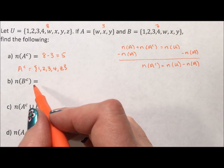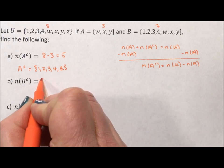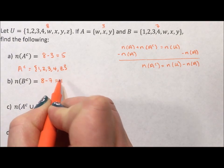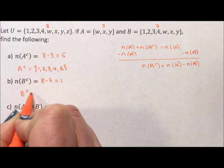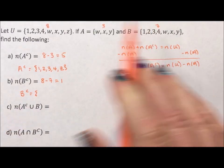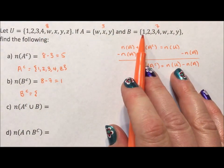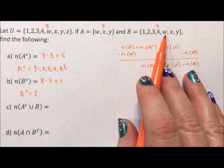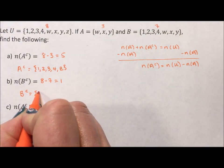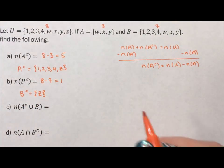I have the same choices with B because the same rule applies. I can either say 8 minus 7 is 1, or I can note that the complement of B is made up of the elements in the universe that B doesn't have. Well, 1, 2, 3, 4, W, X, Y... Z.